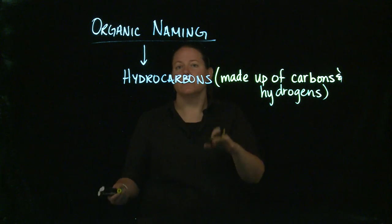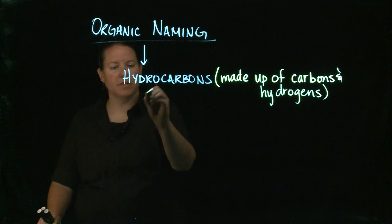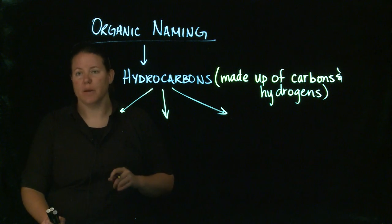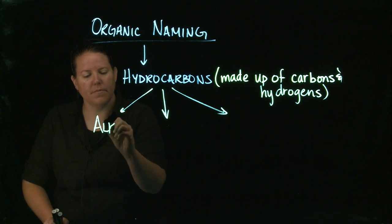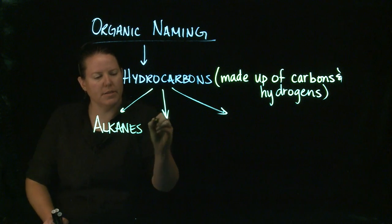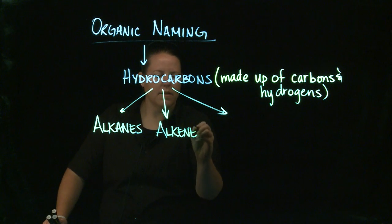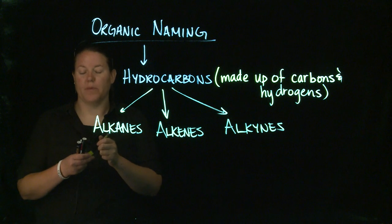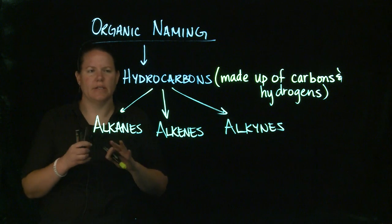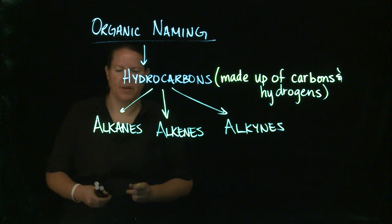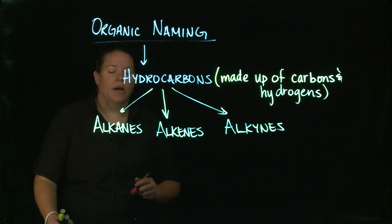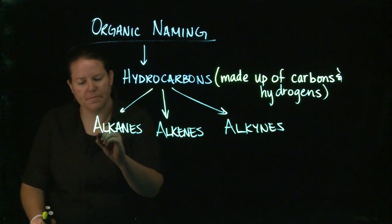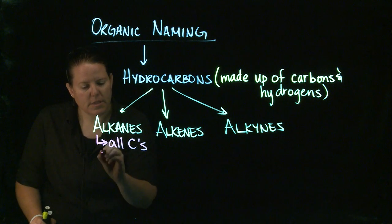We're going to take hydrocarbons and separate them into subgroups. The subclasses we're going to talk about are alkanes, alkenes, and alkynes — all of these being aliphatic in nature. Aliphatic was defined in the last video. Alkanes have the distinction of having all single bonds between the carbons.